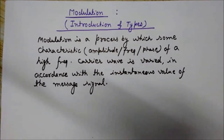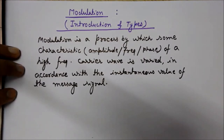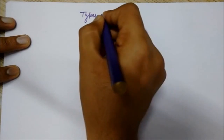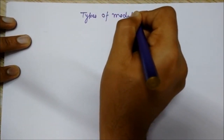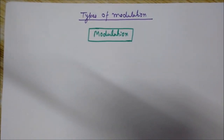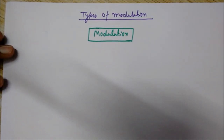We will deal with the concept of modulation and various types in detail in upcoming lectures. Now let's see what are the various types of modulation. We will see different types one by one. For this I will draw a diagram — a sketch which will depict various forms of modulation types. Modulation can be broadly classified into two categories: continuous wave modulation and pulse modulation.